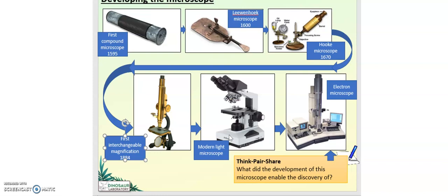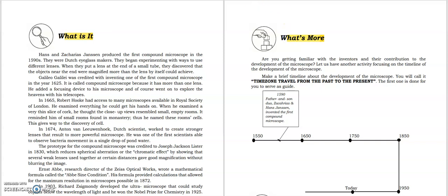Now let's proceed to the 'what's more' portion. For this section, you are going to write in a time zone travel from the past to the present activity those that I mentioned in our discussion. It started in 1590, father and son duo Zacharias and Hans Jansen invented the first compound microscope. Then followed by 1625, Galileo Galilei was credited with inventing the first compound microscope. After that is 1665.